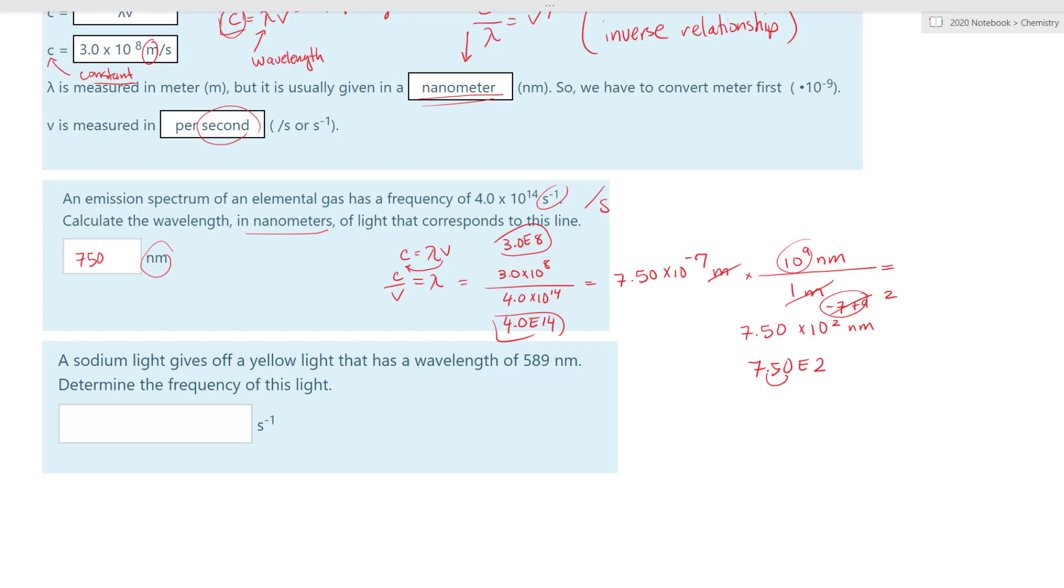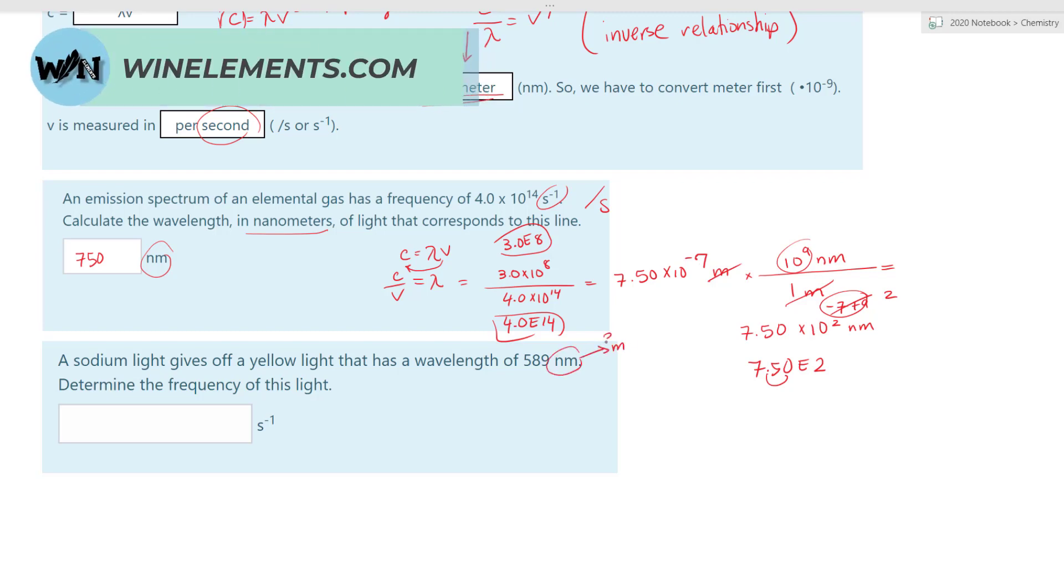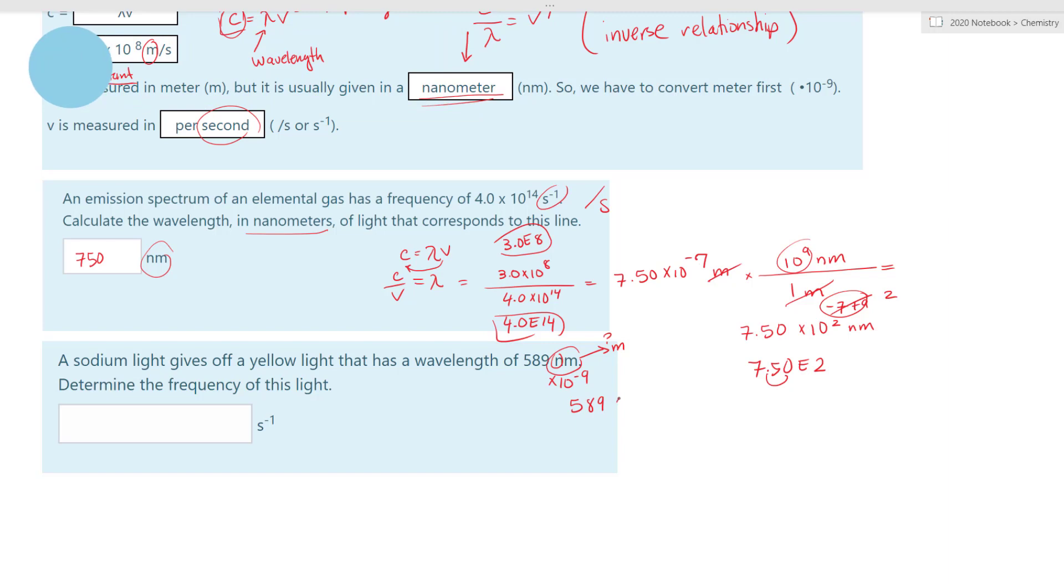Let's go to the next one. A sodium light gives off a yellow light that has a wavelength of 589 nanometers. So again, this is nanometers, so we have to convert it to meters. What is that going to be? What's nano? Nano is times 10 to the negative 9. So 589 times 10 to the negative 9. There you go. Isn't that nice?